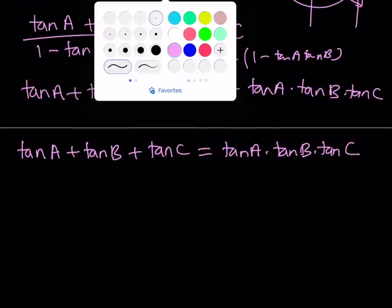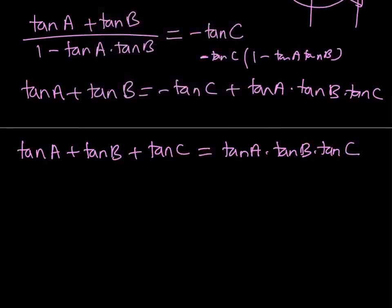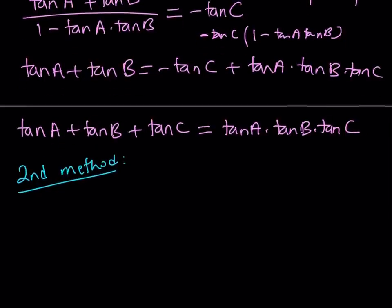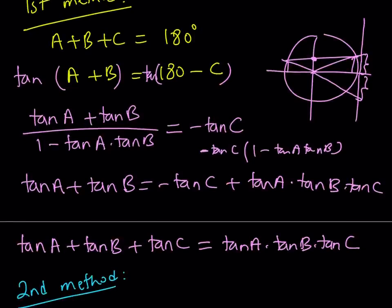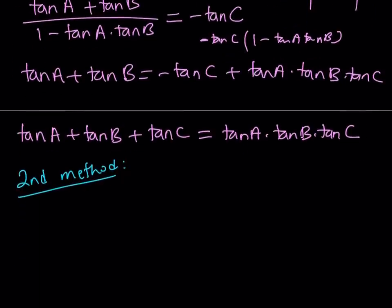Now let's talk about the second method. Even though it's similar to the first method, it has some different ideas. With the first method, we isolated A plus B on one side and then took the tangent of both sides. In this case, we're not going to put anything on the other side — we're going to keep everything as is and start with the left-hand side: tangent A plus tangent B plus tangent C.